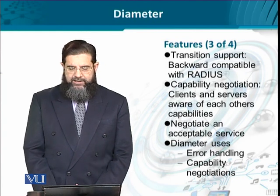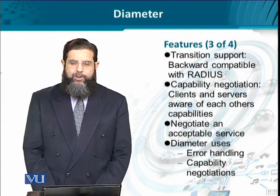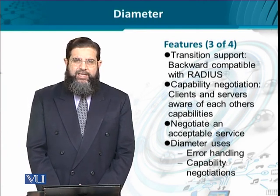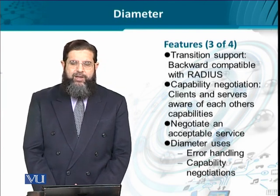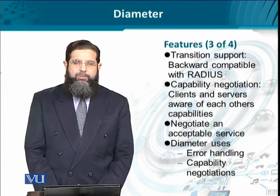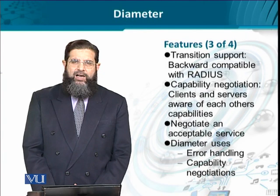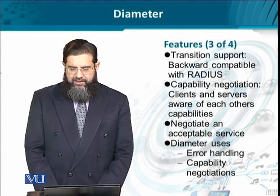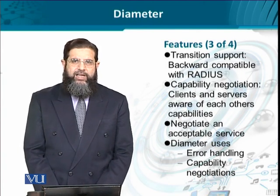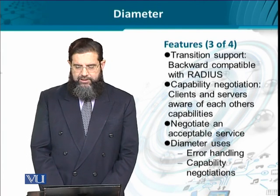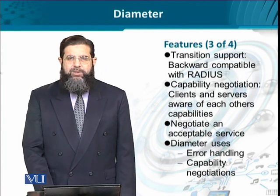A very interesting feature in Diameter is capability negotiation. Here, the client and server can actually negotiate on mutually agreeable parameters — this was not the case in RADIUS. In RADIUS, if parameters would not match, a client could not avail the AAA services. But Diameter uses smart mechanisms like error handling and capability negotiation, exchanging values of parameters and features on either side to negotiate on an acceptable service level.